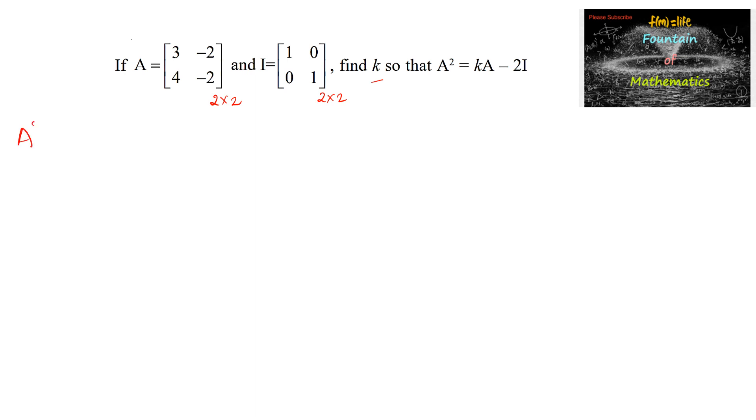So let us consider A squared. That's A into A, which is equal to 3, minus 2, 4 and minus 2, into again 3, minus 2, 4 and minus 2.